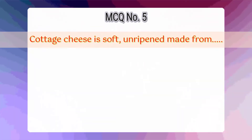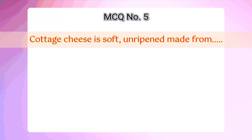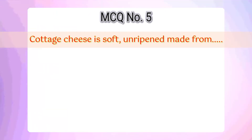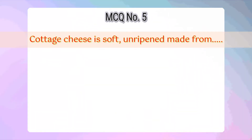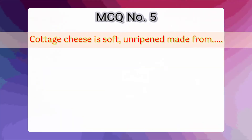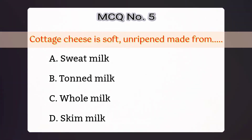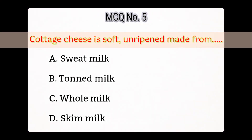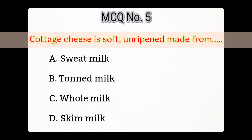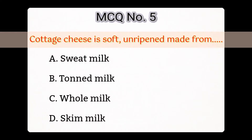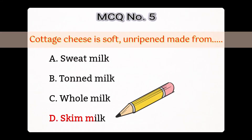5th question: Cottage cheese is soft, unripened, made from — Option A: Sweet milk, B: Toned milk, C: Whole milk, D: Skim milk. Answer is D: Skim milk.